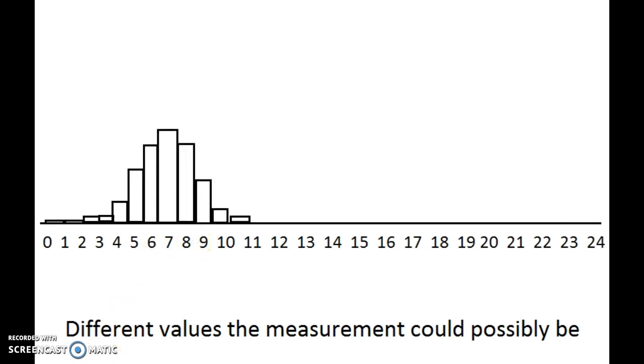The height of my distribution would be tallest around 6, 7, and 8 because that is the most probable outcome for me personally for hours of sleep. And my distribution's probably going to be pretty close to normal. It's symmetric. I get more sleep just about as often as I would get less sleep.